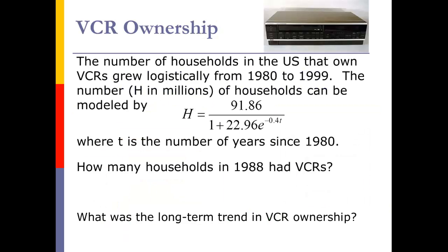So let's have a play with a model here. We basically have a model that represents the number of households that have VCRs from 1980 to 1999. It's in terms of millions and T is in terms of the number of years after 1980. Our first question is: how many households in 1988 had VCRs? That gives us T equals eight, because we're talking eight years after 1980.